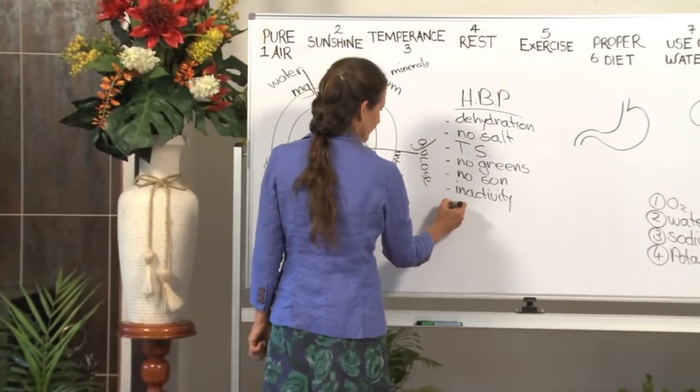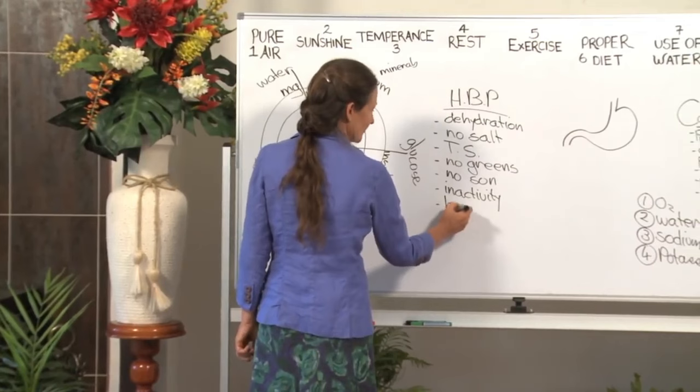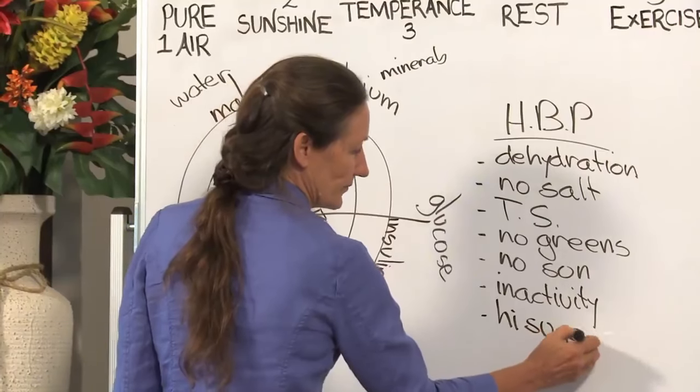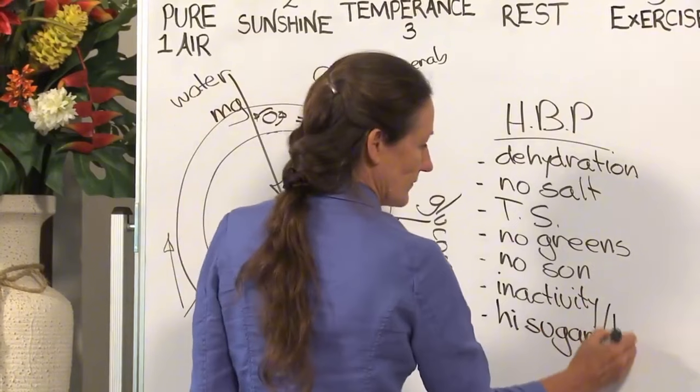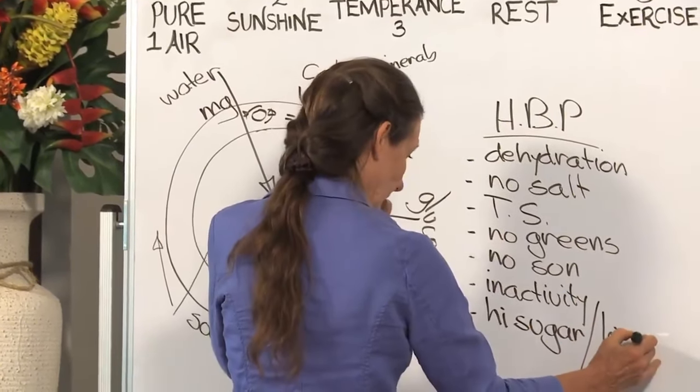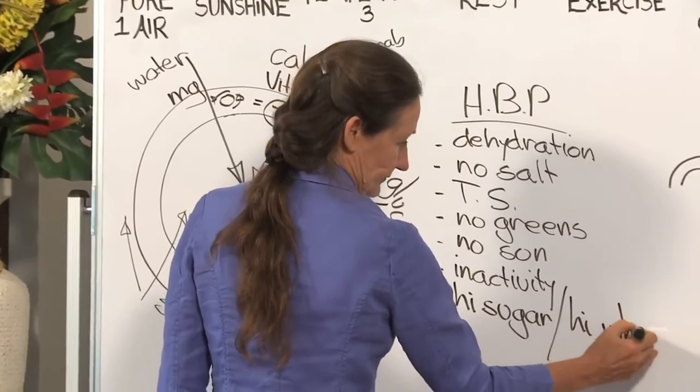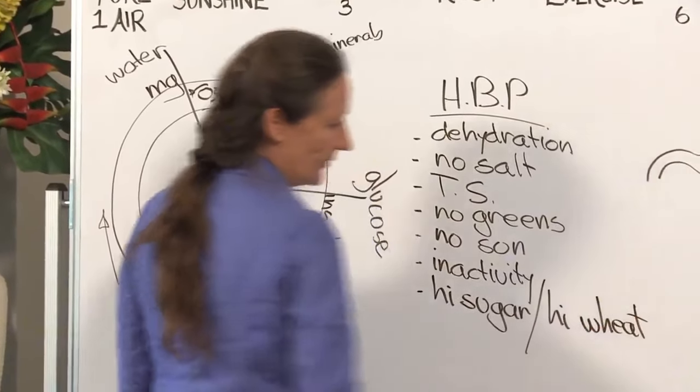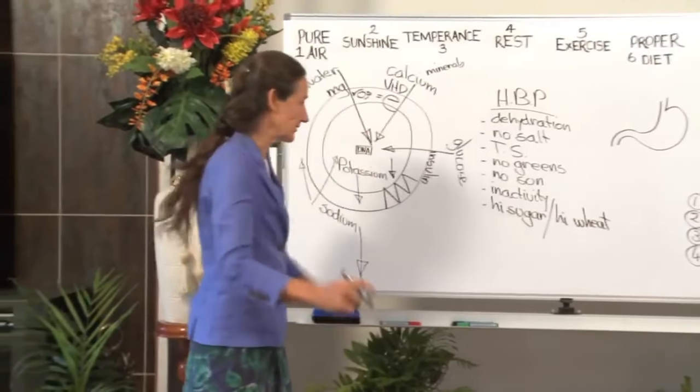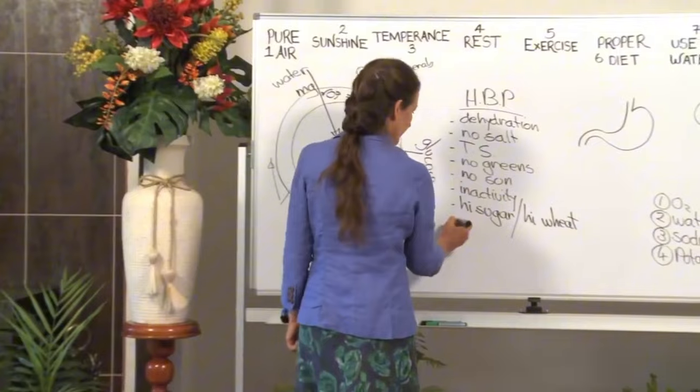High blood pressure can be caused because of a high sugar, high carbohydrate diet. We'll say high sugar, high wheat. Earlier in the week I showed you how this wheat is getting that blood sugar level up too high, wearing out the pancreas.